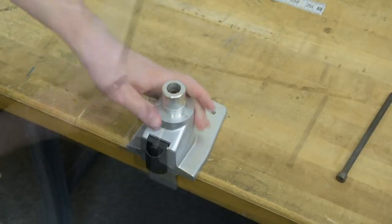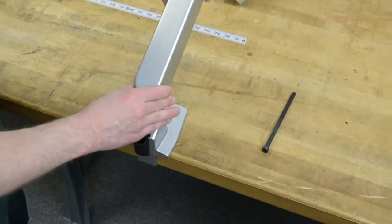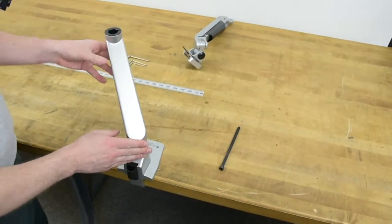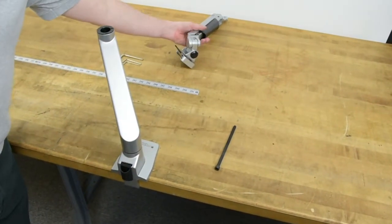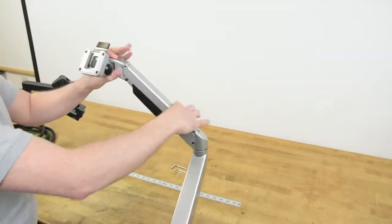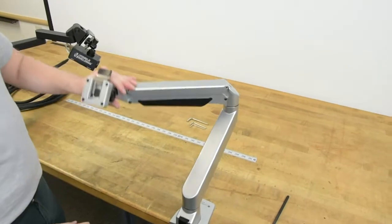Now with the base on solidly, the next arm segment just fits right on it and snaps on. You have to get it straight, and it pops right in. And now we're going to take the next segment and do the same on the end of that. There we are. Now you can see that it bends, it floats up and down, a lot like the camera arm.